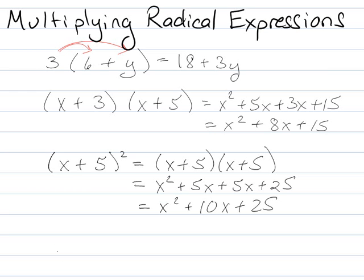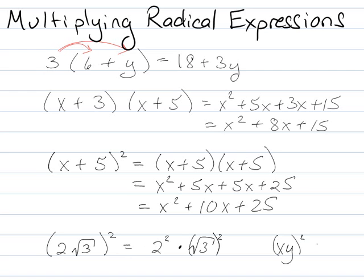A couple of other things that are good to review: if I have 2 square root of 3, and that whole thing is squared, remember that means quite literally 2 squared times the square root of 3 squared. Because you multiply everything on the inside — so if I had (xy)², that'd be x² y², right? So by the same tactic, 2√3 squared would be 2² times √3², which is 4 times the square root of something. If you square it, you're basically undoing the square root, so you just end up with what you have on the inside.